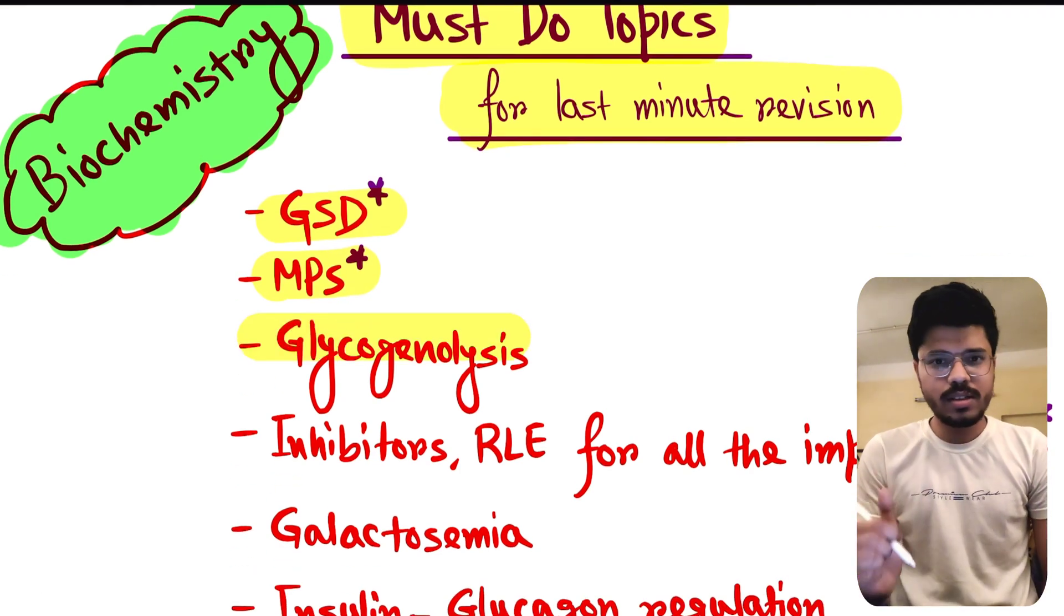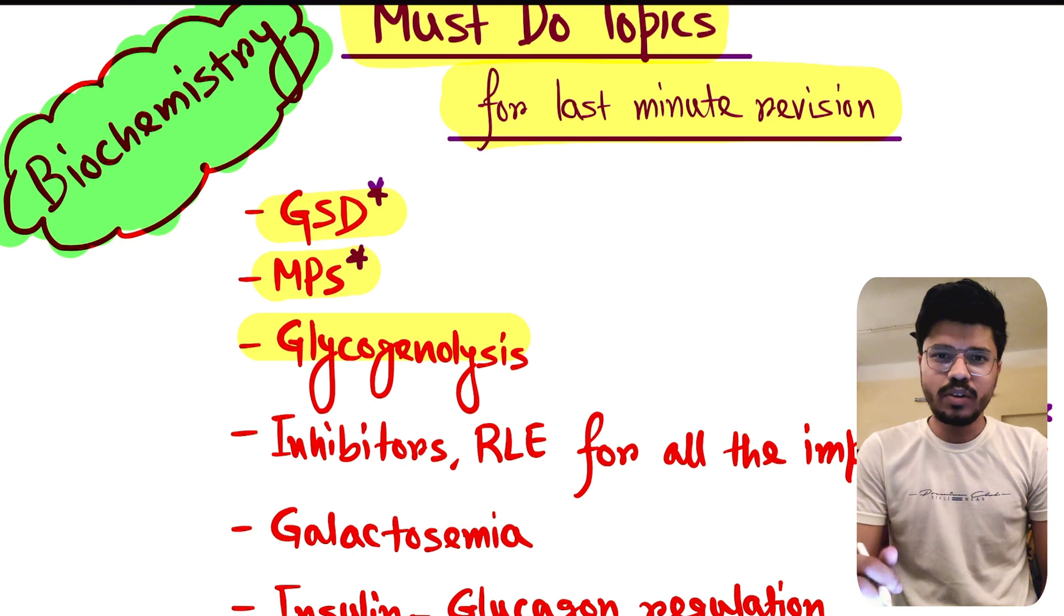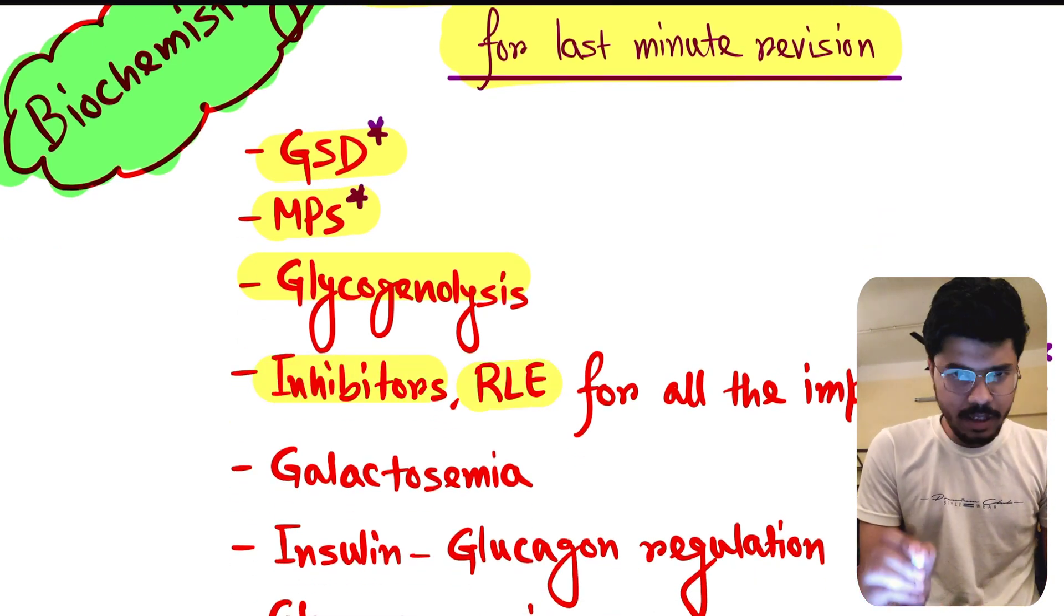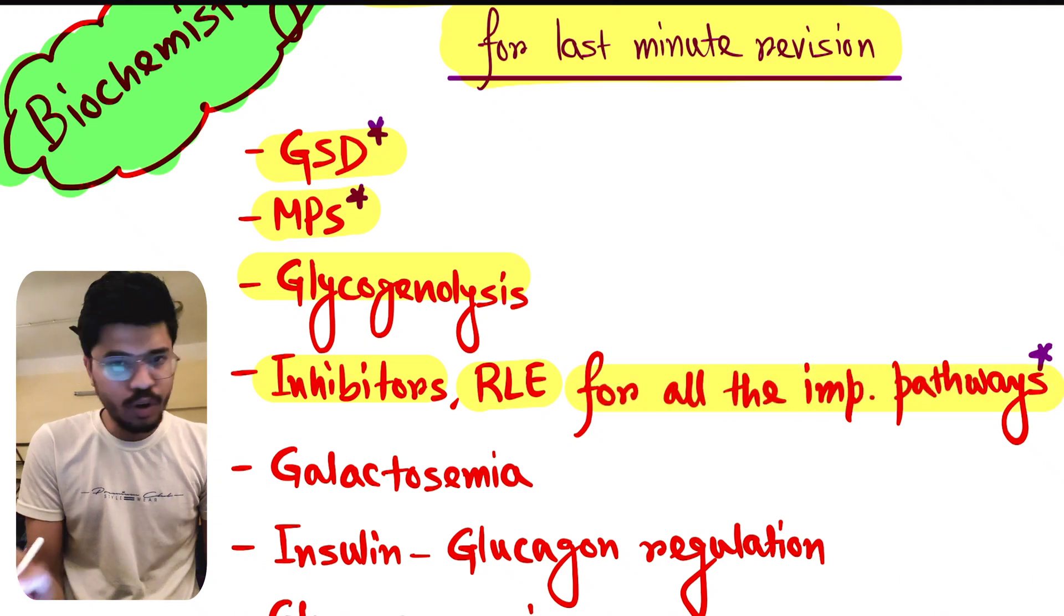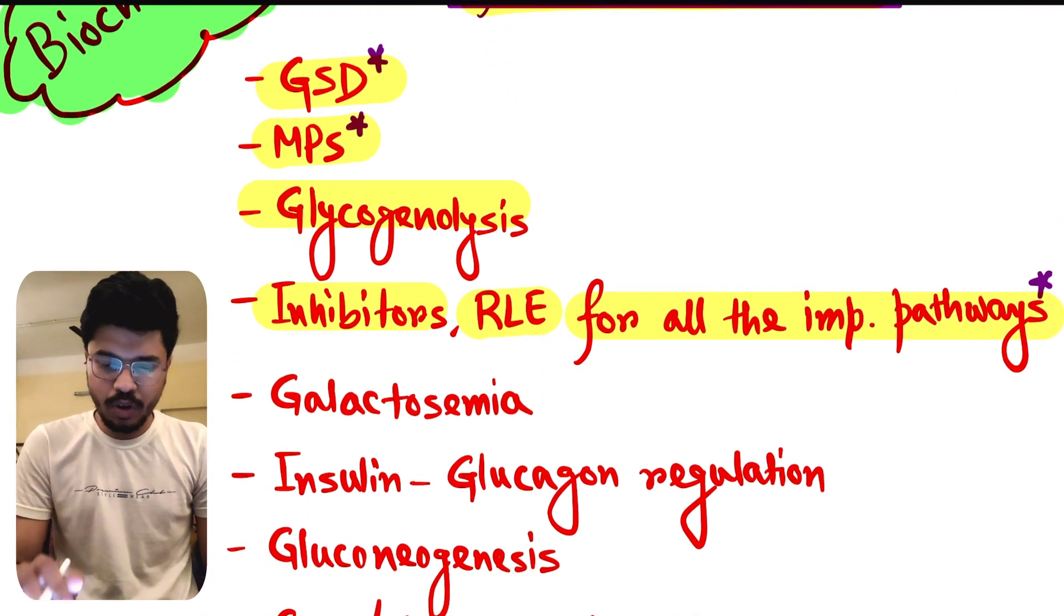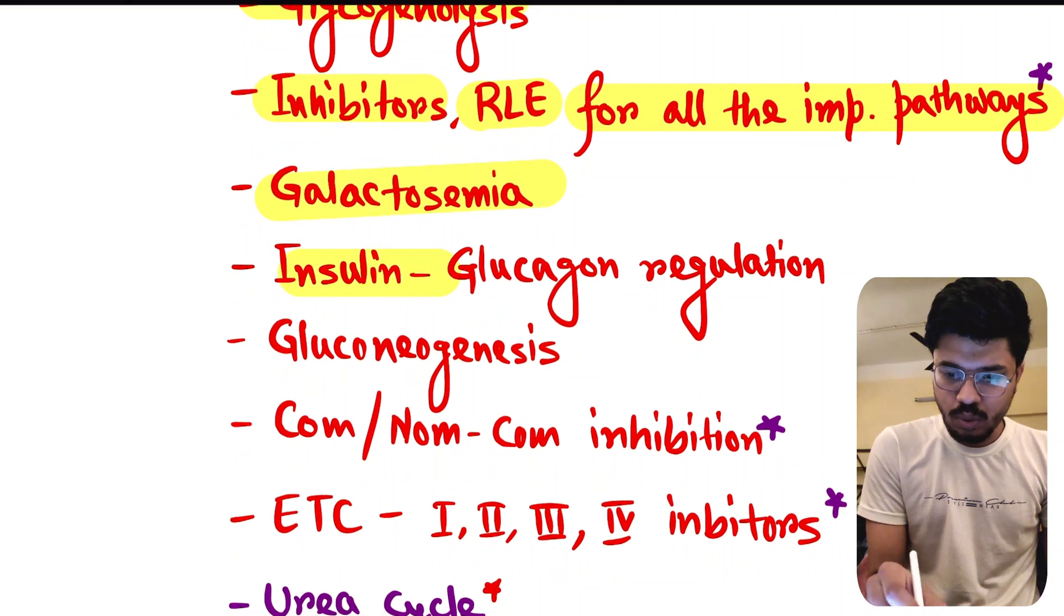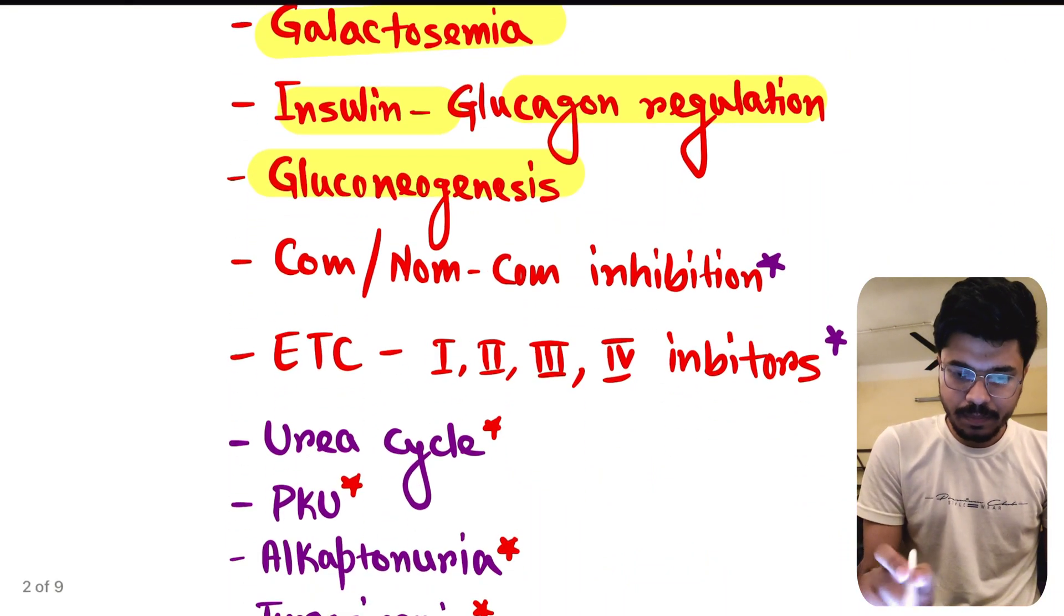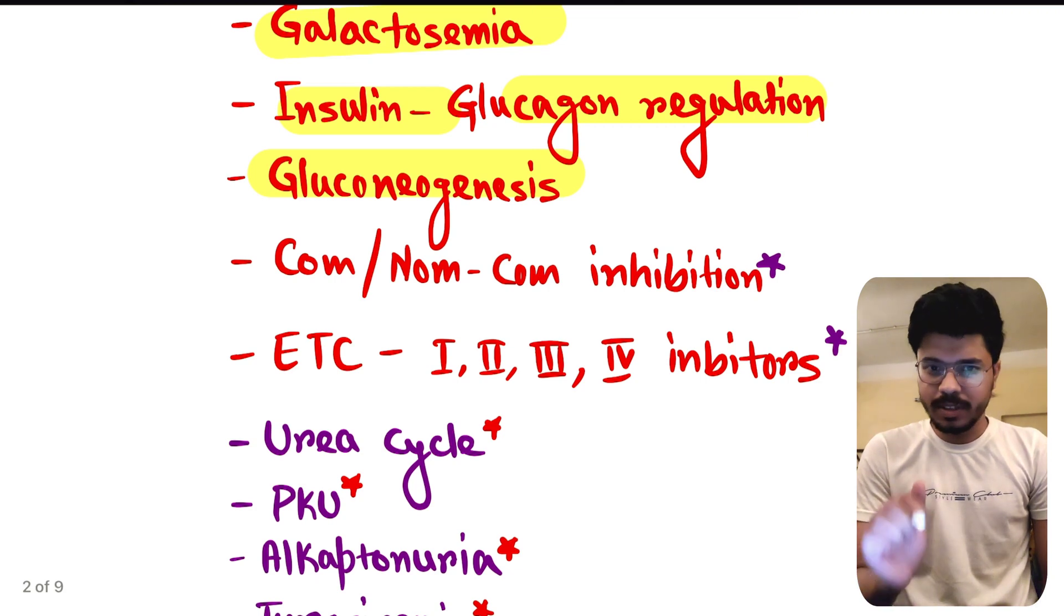Mucopolysaccharides, glycogenolysis, glycogenesis - both are important but glycogenolysis is more important. Inhibitors, rate-limiting enzymes for all the important pathways, these are extremely important. Galactosemia, insulin glucagon regulation, gluconeogenesis, especially gluconeogenesis substrates.